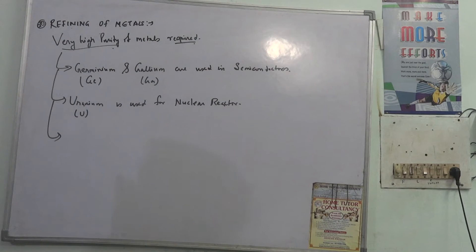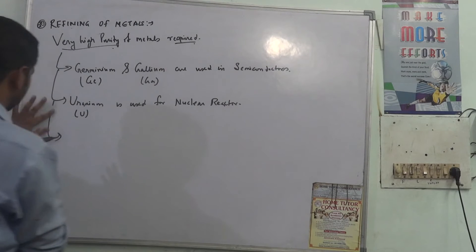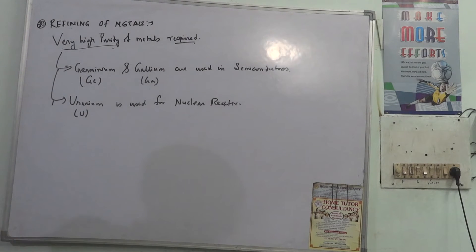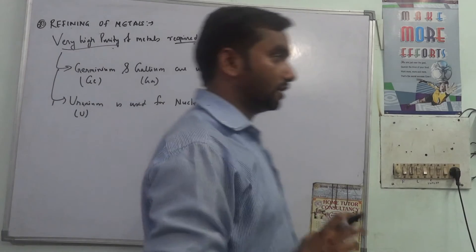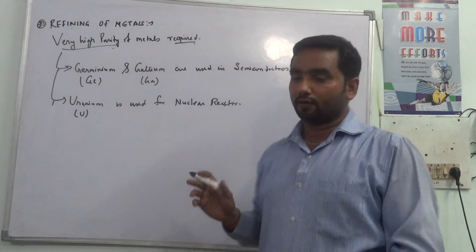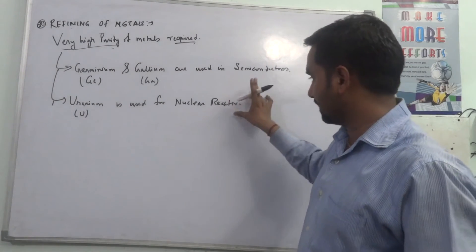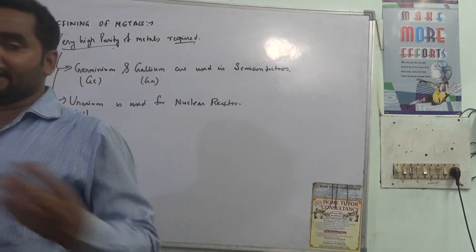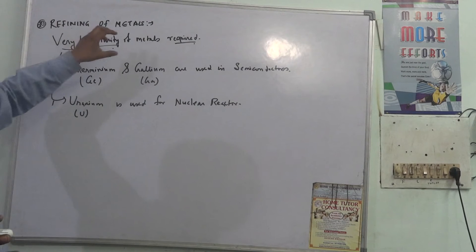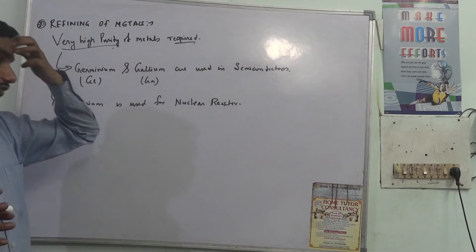Now for germanium, gallium, uranium-like metals in which the purity should be hundred percent for getting the exact function to be done by those metals, we require very high purity or refining of metals which produce very high purity of metals, pure metals.